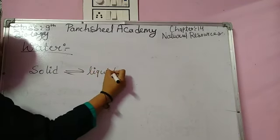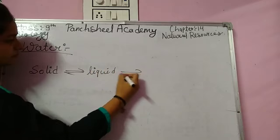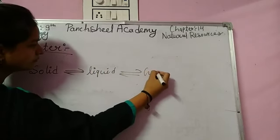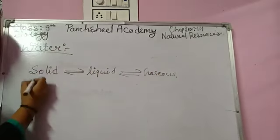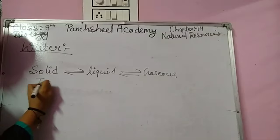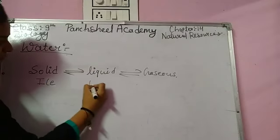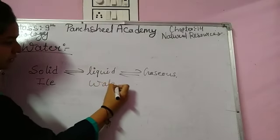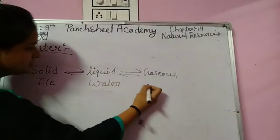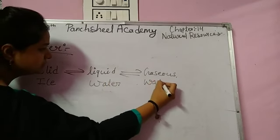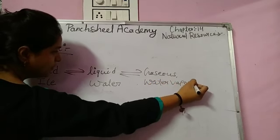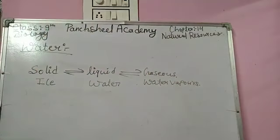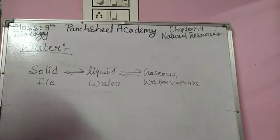The three stages of water are: solid — that means ice; liquid — that means water; and gaseous form — that means water vapor. Yeh kuch stages hoti hain jo water ki dekhne ko milti hain.